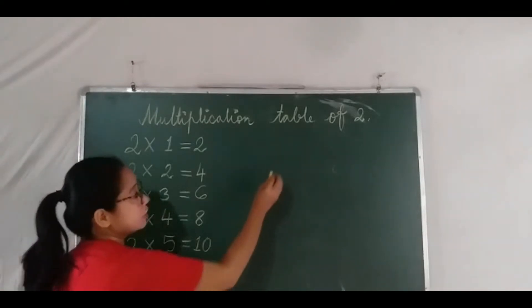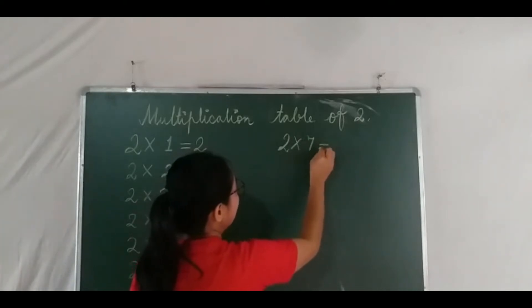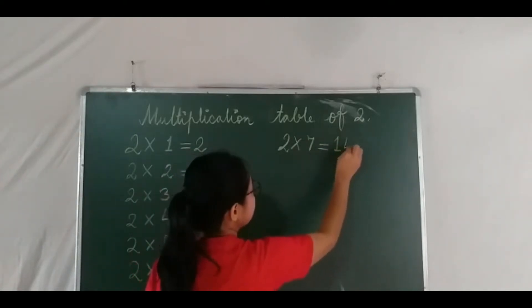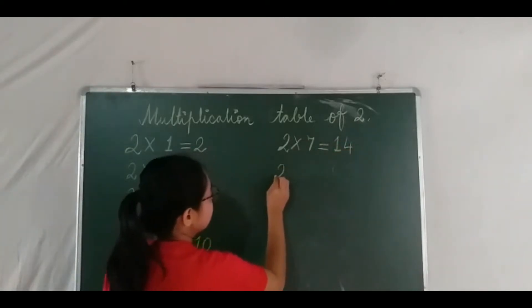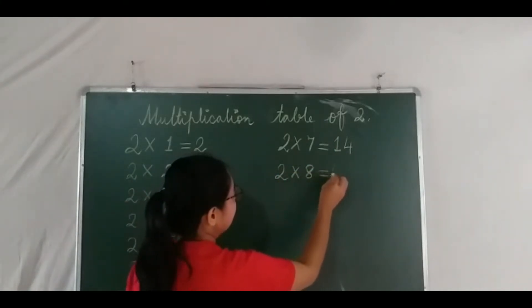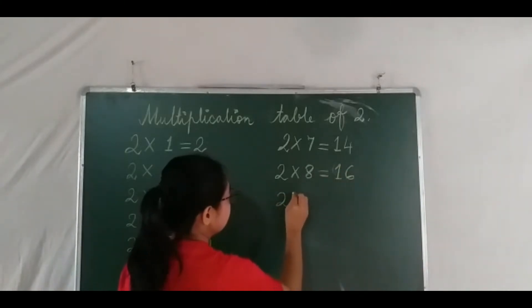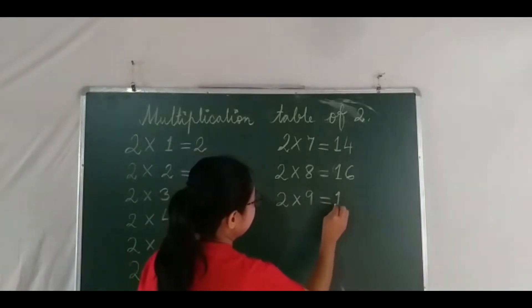Two sevens are fourteen, two eights are sixteen, two nines are eighteen.